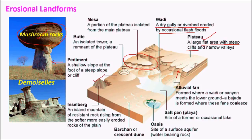An inselberg is a resistant rock that stands tall and undergoes differential erosion, remaining over a long period of time and quite different compared to surrounding structures. A pediment is simply the deposition of all the debris eroded by wind and water, which settles just below structures like plateaus, mesas, and buttes. These sediments are called pediments.